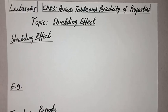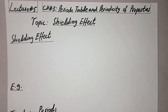Good morning and Assalamu Alaikum students, hope you will be fine. As you know, we are learning Chapter Number 3 named Periodic Table and Periodicity of Properties. We have learned many topics related to the periodic table and periodicity of properties. Yesterday we learned the first topic of periodicity of properties, which was atomic radius or atomic size.